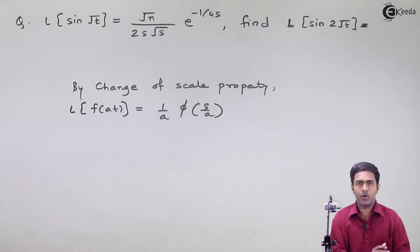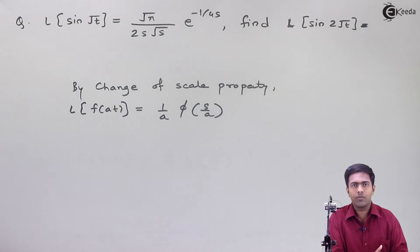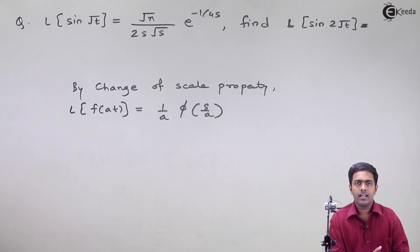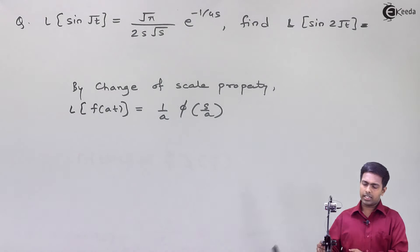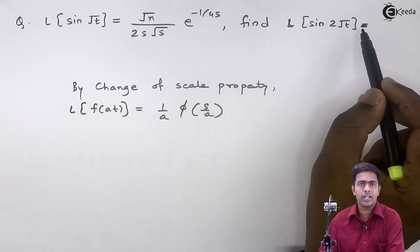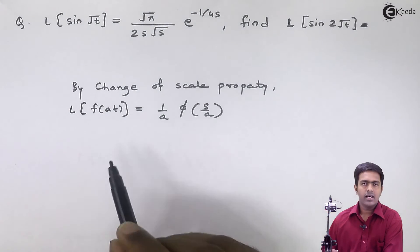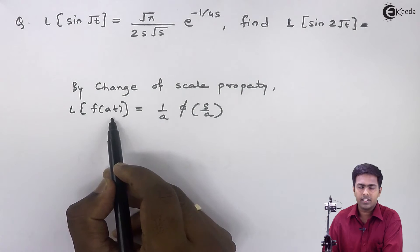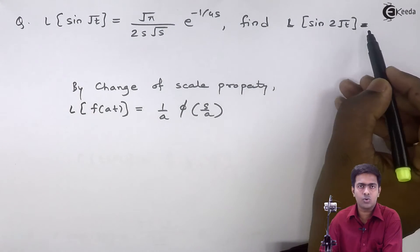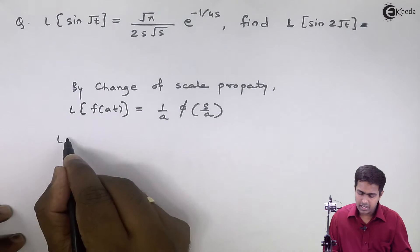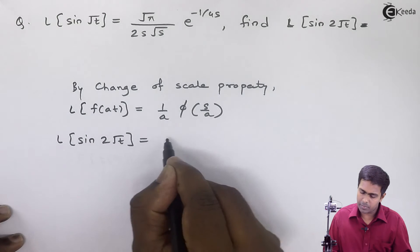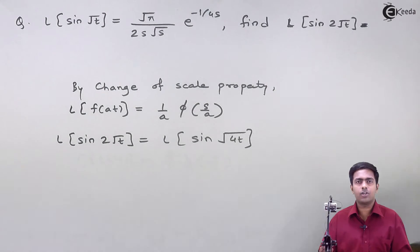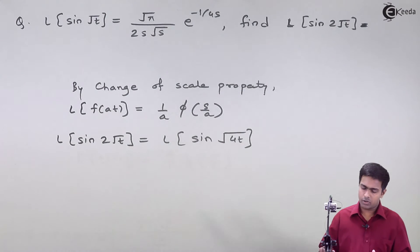If you observe the question, sine of root t is given and sine of 2 root t is asked. If I use this property directly, I will get a wrong answer. Why? Because you have been asked to find sine of 2 root t, meaning the constant 2 is multiplying root t. But the property says that a should multiply t, not root t.